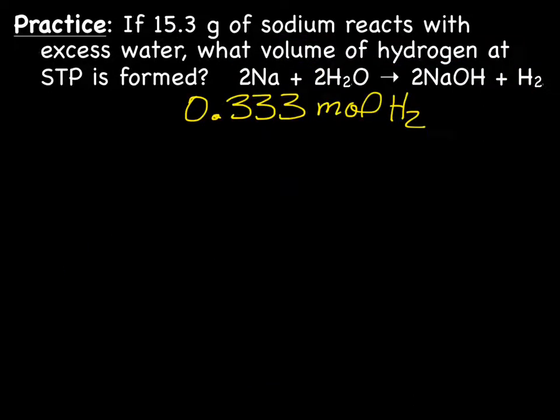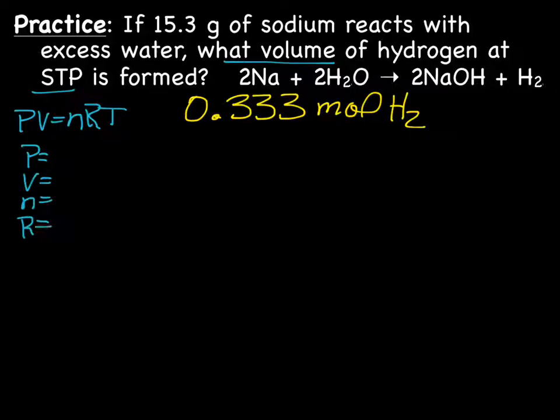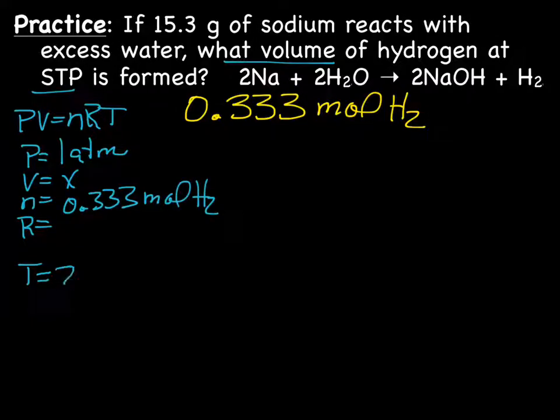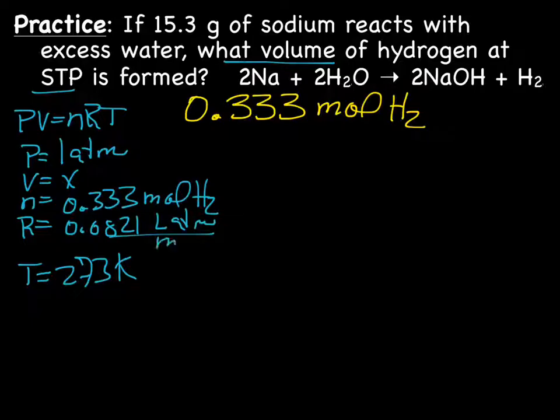We don't have the answer yet because it was asking for the volume of hydrogen. Let's see what information we have now. We have the number of moles of hydrogen, and we have the temperature and pressure. Now we can use the ideal gas law to figure out the volume. We got pressure, volume, number of moles, our R, and temperature. Our pressure is standard, so it's 1 atm. We're looking for volume. We have 0.333 moles of hydrogen. Our temperature is standard, so it's 273 K. And our R, because we're using atm, is going to be 0.0821 liters atm mol K.